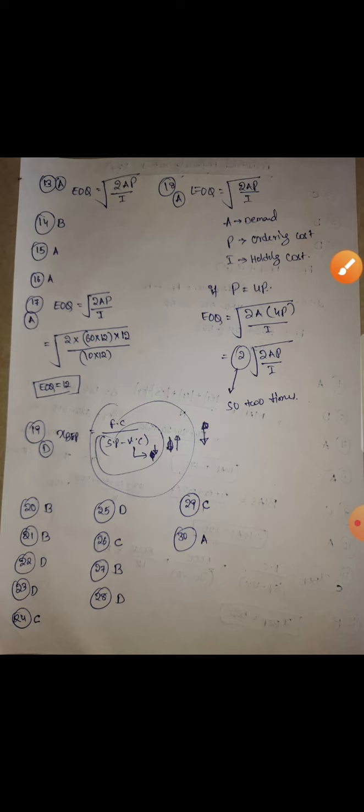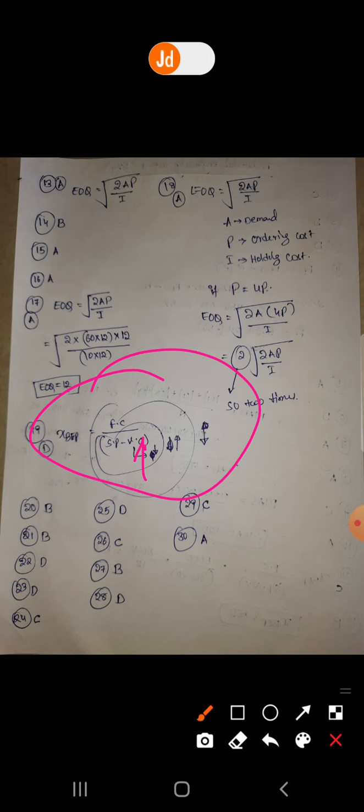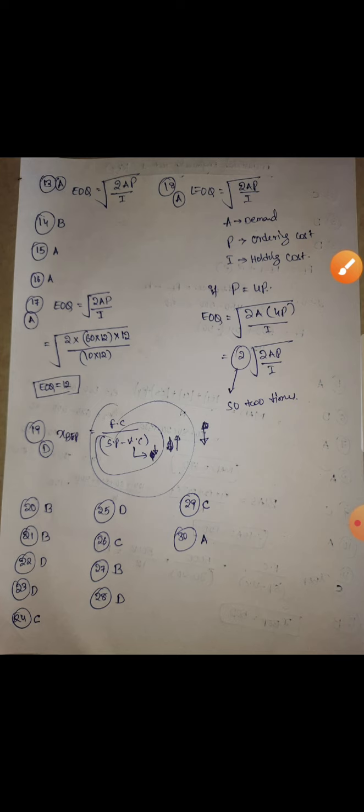Nineteenth question: breakeven point can be lowered by what means? This is the breakeven formula. If you decrease the variable cost, the denominator will become increased because the negative value decreases. When denominator increases, the whole value decreases. So by lowering the variable cost, D is the correct answer.